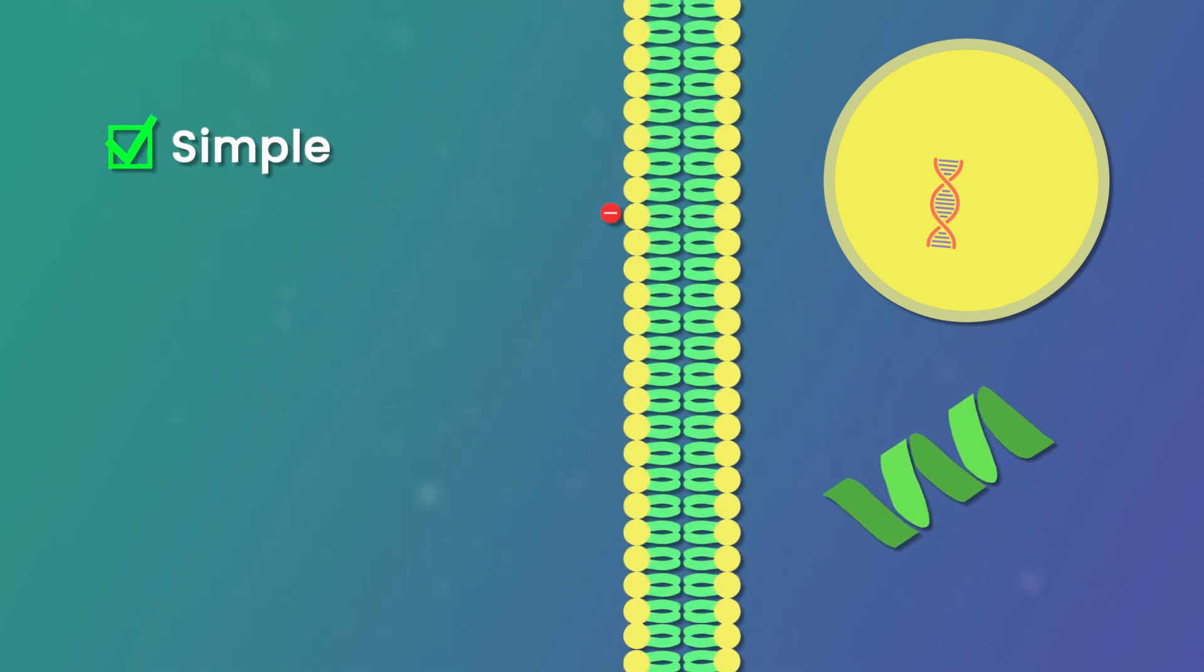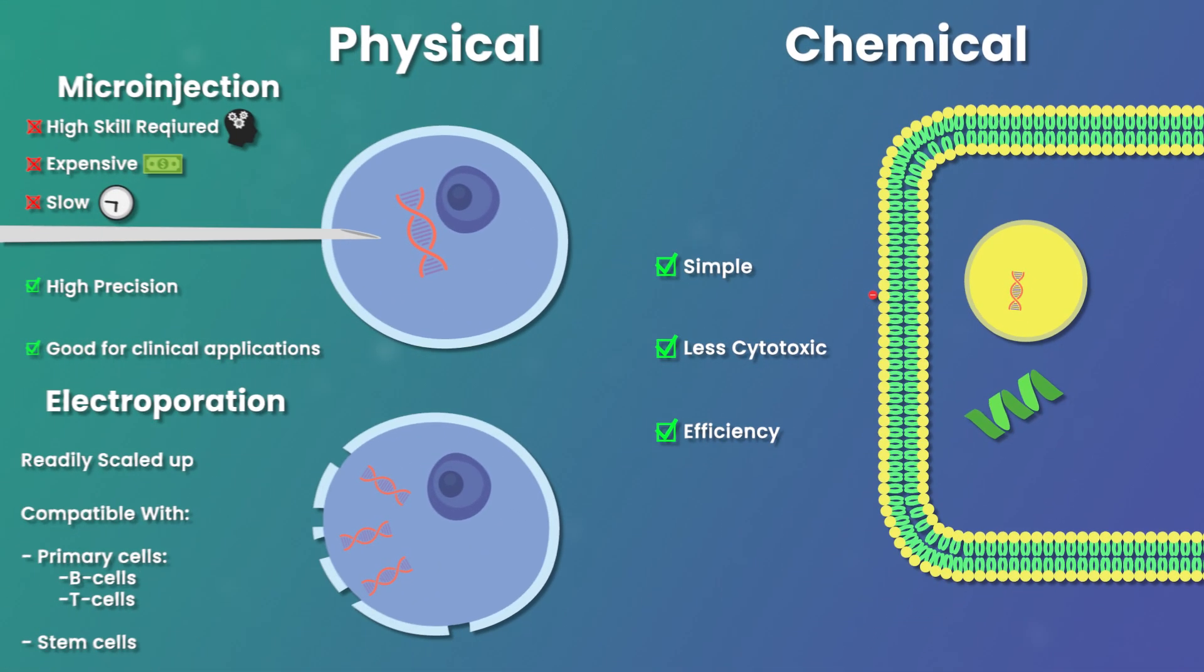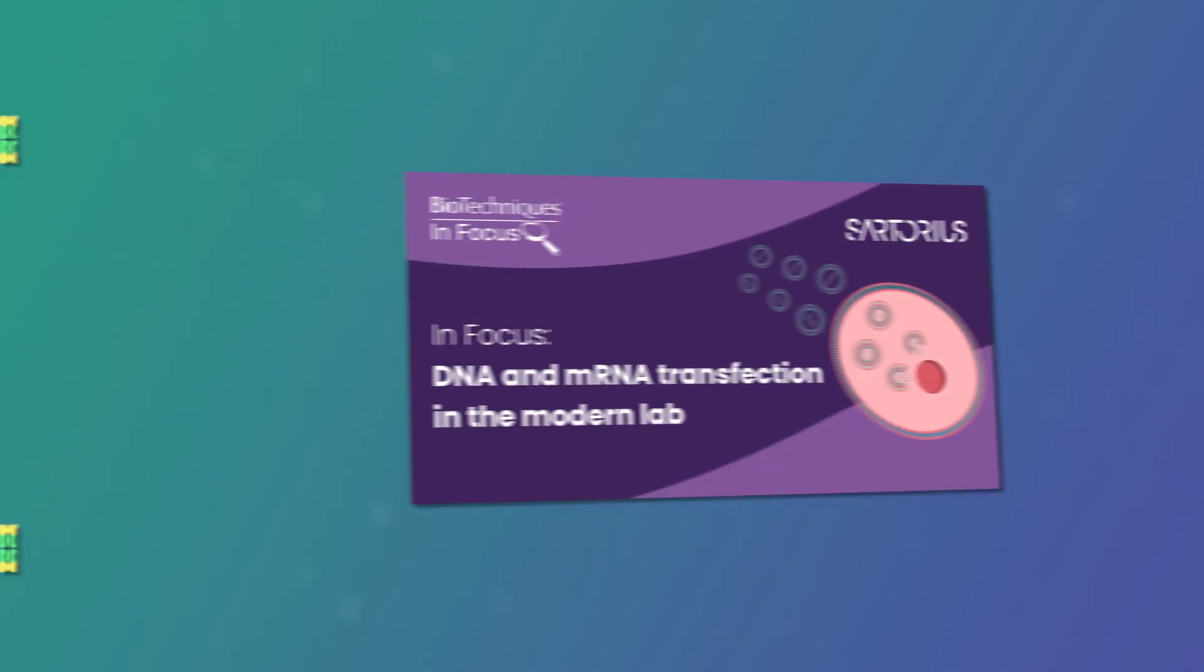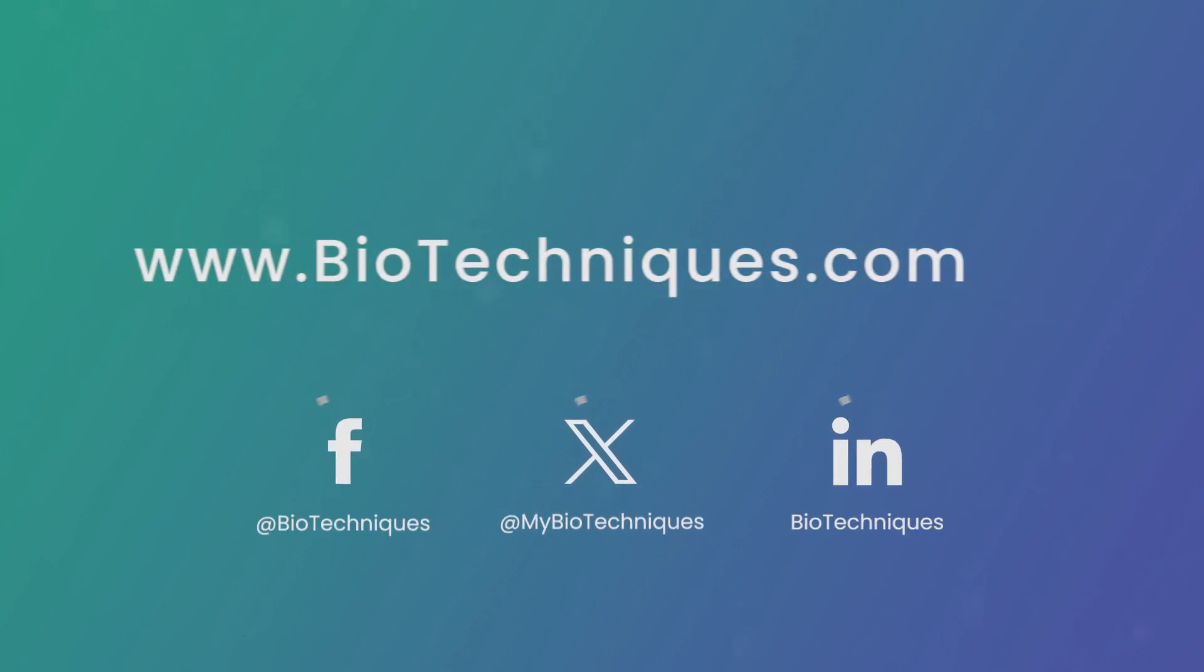This method is comparatively simple and less cytotoxic than physical and viral methods. While initial chemical methods were less efficient than transduction, recent developments have dramatically improved their efficiency. Selecting the right transfection method for your application can improve your experiments. To find out more about transfection, check out our InFocus on the topic with Sartorius at www.biotechniques.com.